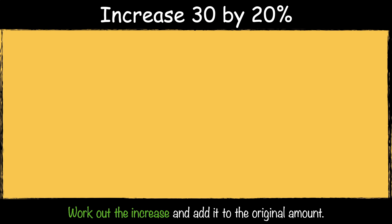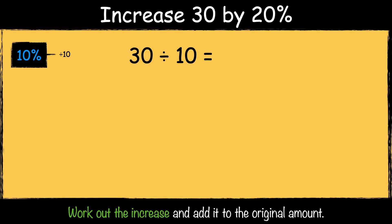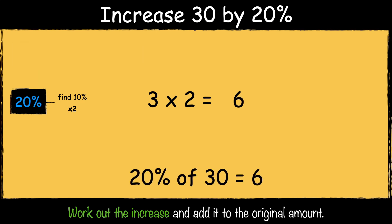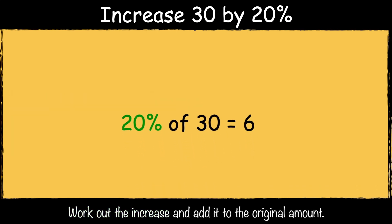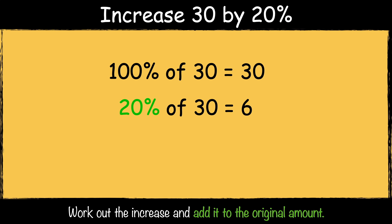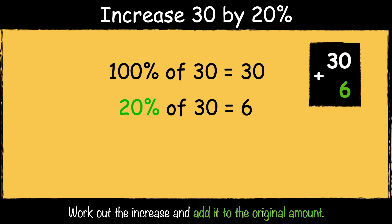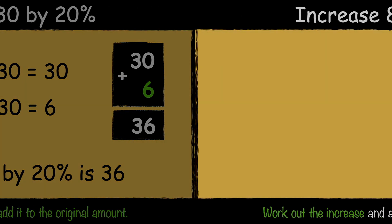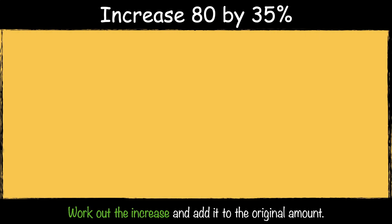Here's the first example: increase 30 by 20%. First, let's find 10% of 30 by dividing it by 10. 30 divided by 10 is 3. Then we multiply the answer by 2 to find 20%. 3 times 2 is 6, so 20% of 30 is 6. The next step is to add it to the original amount, so 30 add 6 is 36. So 30 increased by 20% is 36.